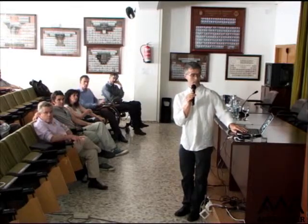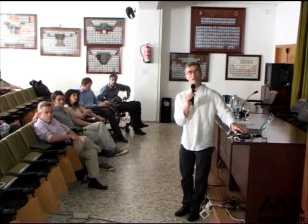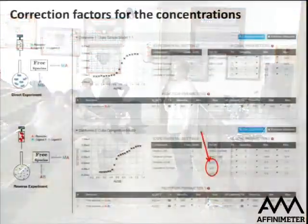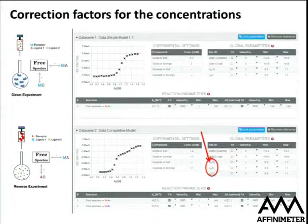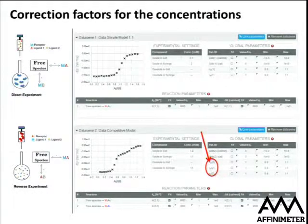We also have parameters to correct the concentration of molecules in the experiment. ITC is very sensitive to the concentration of solutes and macromolecules. A mistake in concentration propagates through all calculations and makes results completely nonsense. To correct for any possible concentration error, we introduce correction factors that scale the concentration of all molecules.